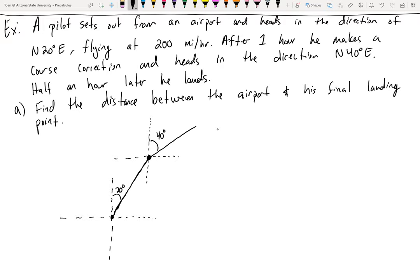He travels for half an hour before landing. The one-hour trip should be longer than the half-hour trip — specifically by half. So if this is one full hour, the half hour is about half as long. If I'm off by a centimeter or two, it doesn't matter. The question asks: find the distance between the airport and his final landing point — find distance D.